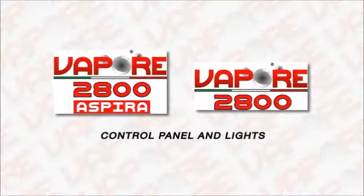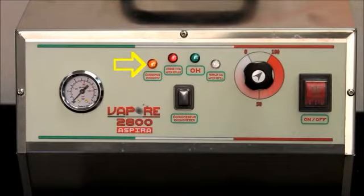Control panel and lights: When the orange economy light is on, electrical economy mode is engaged. When the light is off, normal functions resume. When the light is flashing, all heating elements are off.